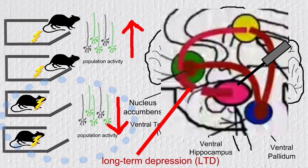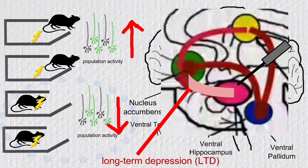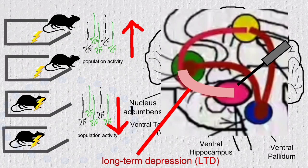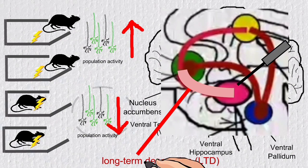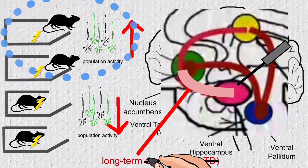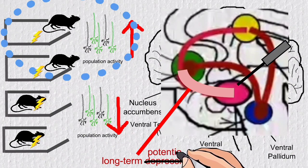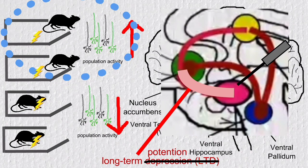But what does long-term depression mean here? Basically, it means that the efficiency of the synapses, the connections between the neurons of the pathway, is reduced. Simply said, the signaling in the pathway gets weaker after it had been used for a while, which in the end leads to a lower population activity. The other rats, however, react with long-term potentiation, which is the opposite. Their pathway from the hippocampus gets stronger the longer it had been used.